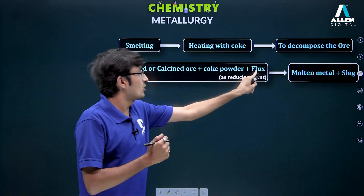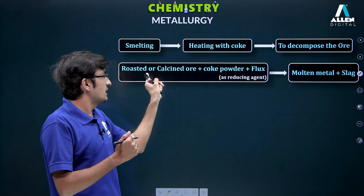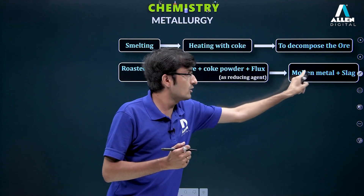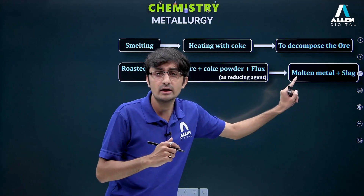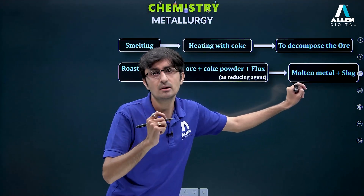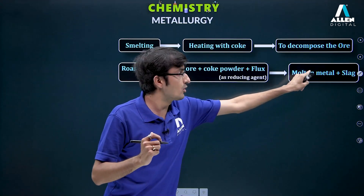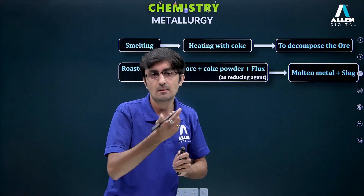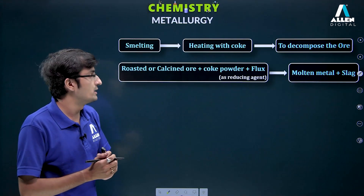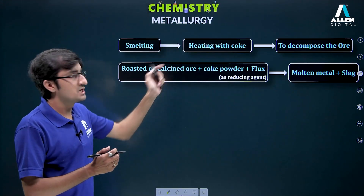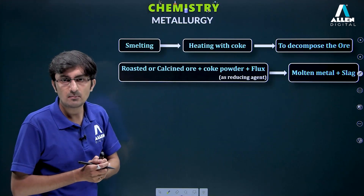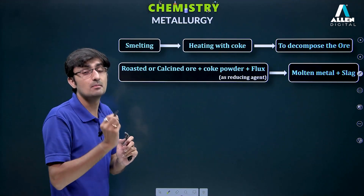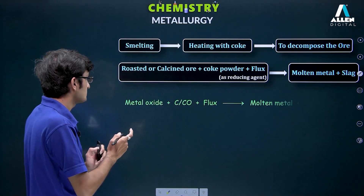The metal oxide obtained is further converted into metal, and the metal is in molten state because the temperature is high — at high temperature, metal is obtained in molten state. That was the objective discussed in detail. Now let's understand it through reactions to make the picture clearer.